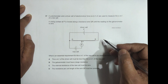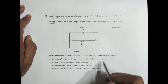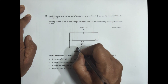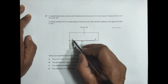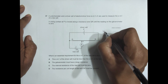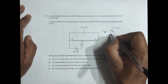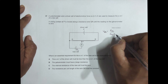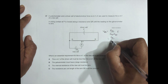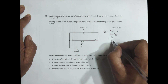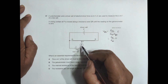We have to identify the essential requirement for the EMF of the new cell to be measured accurately. The first option says the EMF of the driver cell must be less than the EMF of the new cell. Let's call the new cell EMF 'EN'. The PD across region PQ, by the voltage divider formula, equals R_PQ divided by (R_PQ + R_QR) multiplied by E — so V_PQ equals R_PQ divided by R_QR into E.